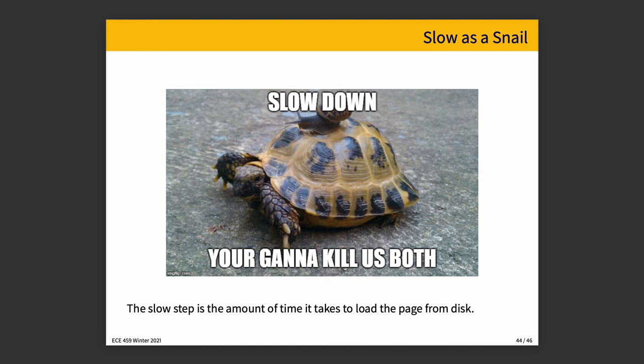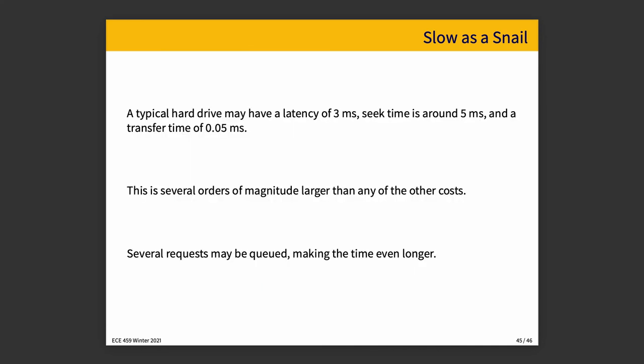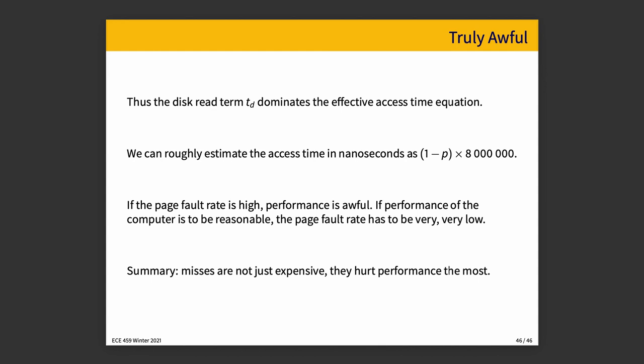Loading from disk is slow — a typical magnetic spinning hard drive may have a seek time latency of around 3 milliseconds, which is many orders of magnitude larger than any other cost. There may also be queuing delays if the device is in use with requests ahead of you. For a magnetic hard drive, disk access truly dominates the effective access time — you can roughly estimate it in nanoseconds as the chance you have to go to disk times about 8 million. If the page fault rate is high, performance is really awful.